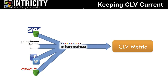What we're doing with Informatica is taking data — Informatica is a tool used for managing very large amounts of data in a repetitive fashion. What Intricity does with Informatica is reach into these systems and pull that data out in order to arrive at a CLV metric.